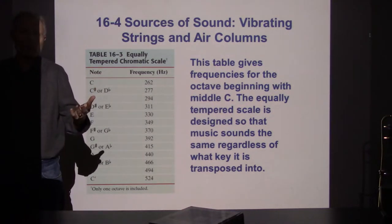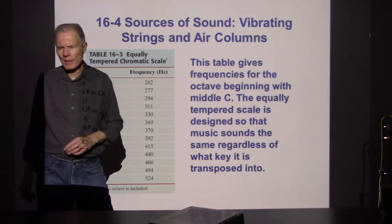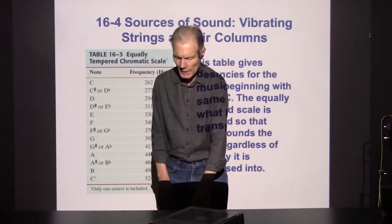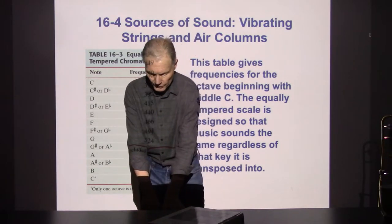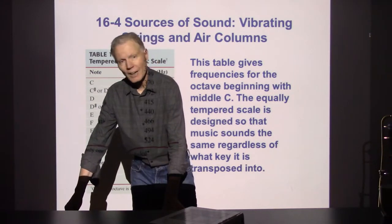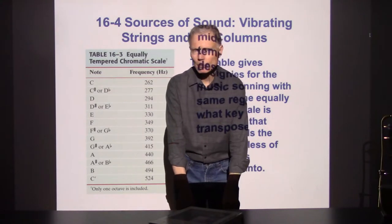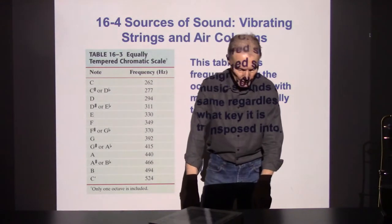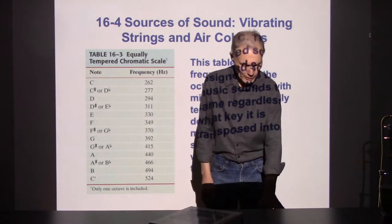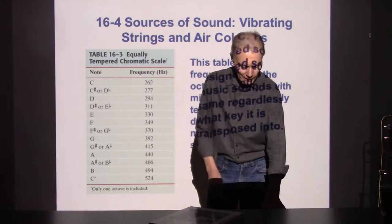Or else we've trained ourselves with the music that we've developed. In any case, that's what that scale sounded like. Now we talked about octaves. So there is C — that's twice the frequency, another doubling, another doubling, another doubling. We can take C's in the other direction — that's half the frequency, half as much. These are all doublings of frequencies, so they're all referred to as being the same note but at different octaves.